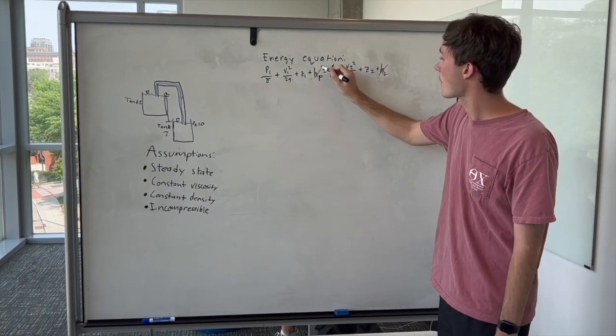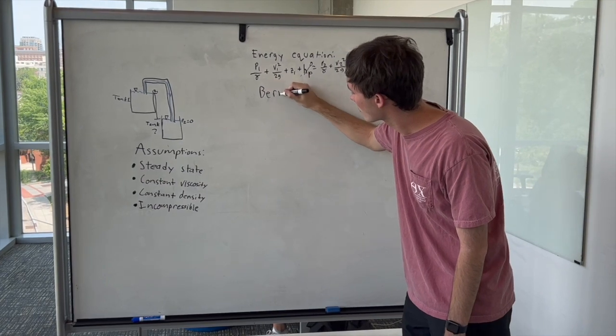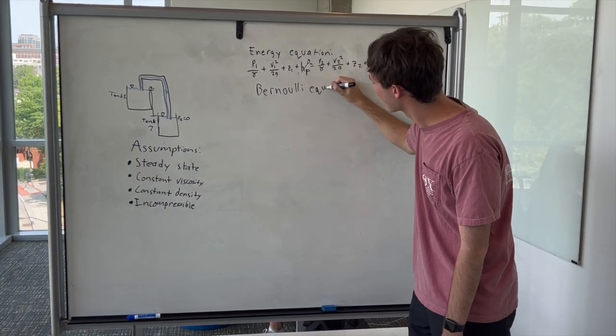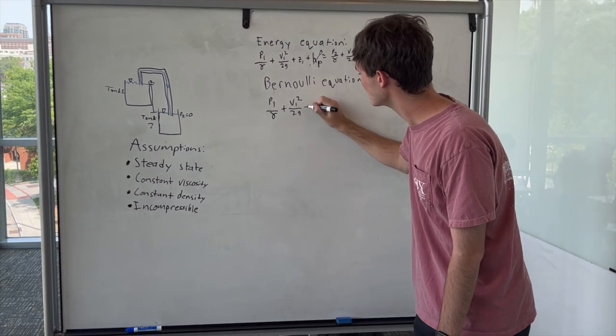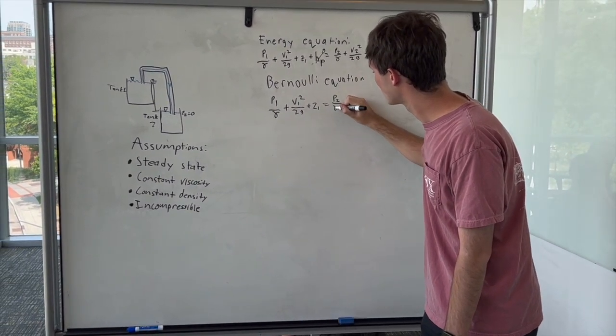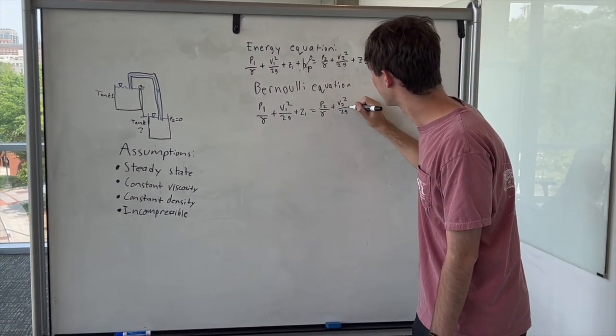Here's the math for how to find the speed V2 at the end of the siphon. Using the energy equation, you can cancel out the work added from a pump and the loss because we're assuming there's no loss in the siphon, which allows us to use Bernoulli's equation to solve for V2.